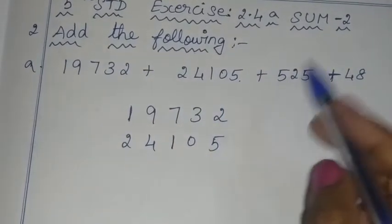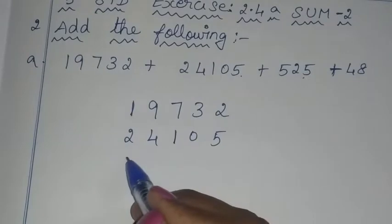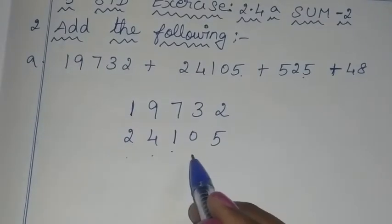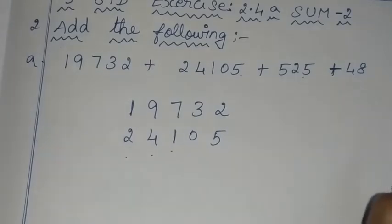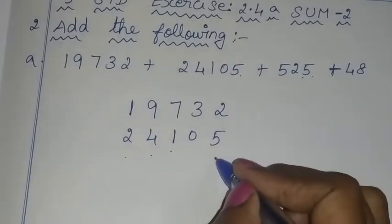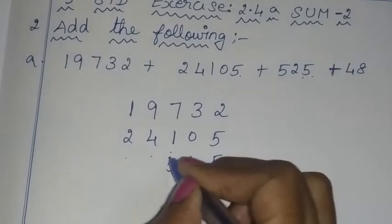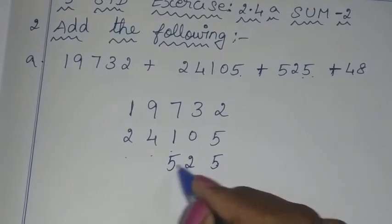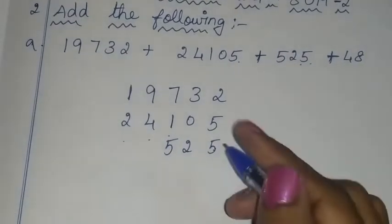Now we will write in the same order. We need to arrange the numbers correctly — one place should align: ones place with ones place. It should be correct. So the answer is correct.